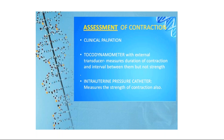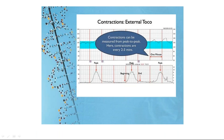Another option is the intrauterine pressure catheter, called IUPC, which is placed internally. It is important for measuring the strength of the uterine contraction, but it is an invasive technique and the membranes have to be ruptured to place it. The advantage is that it measures even the pressure and strength of the uterine contraction. The upper strip tells you about the fetal heart and the lower part tells you about the uterine contractions.